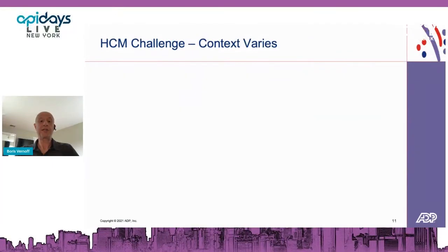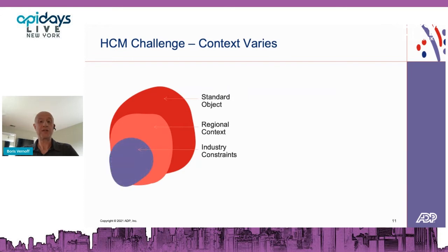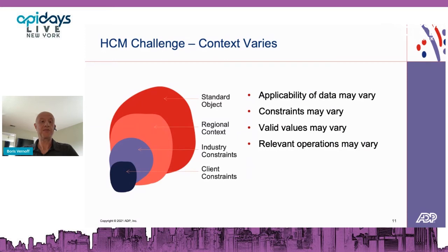Let's look at some challenges in the HCM field — human capital management — though these challenges are applicable to all fields. When we define a standard object or entity, its definition may need to be projected both globally and regionally, or to a specific industry, and possibly to a specific client based on its size and level of service. Monetizing APIs is also becoming a sizable portion of company revenue. Once we realize there could be different contexts, it becomes clear that requirements can and will vary — the applicability of data, constraints, valid values, and relevant operations can all differ.